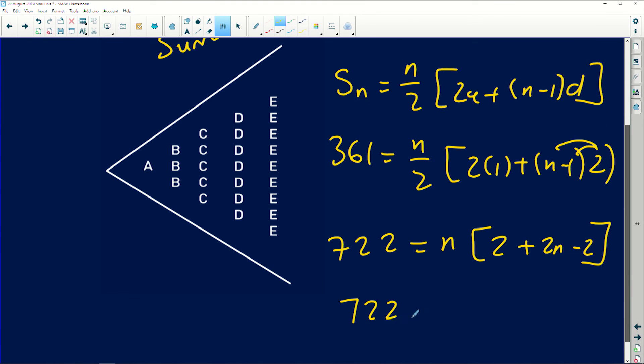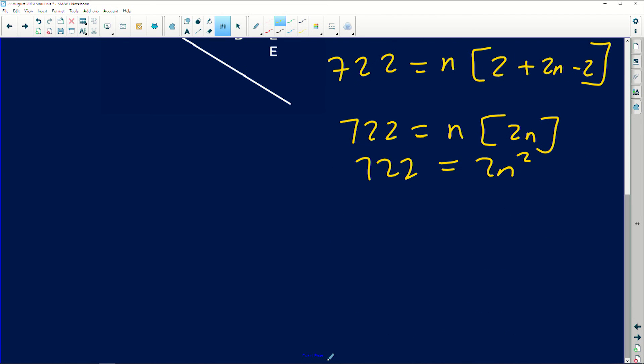Which is going to give us something very exciting, because if you look at it closely, you will then have 722 equals to N into 2N, because the 2 is cancelled. So 722 is 2N squared. If you divide everybody by 2 over 2 over 2, let's see what you'll end up with.